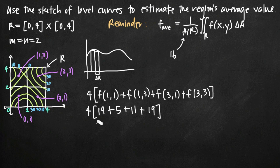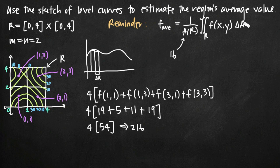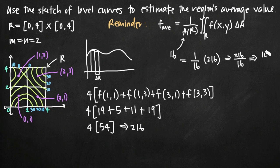Simplifying: 19 plus 19 gives 38, plus 11 gives 49, plus 5 gives 54. Multiplying 54 by 4 gives 216, which is our estimate of the volume for the double integral. For the average value, we multiply 1 over 16 by 216, giving 216 over 16. Simplifying: 108 over 8, then 54 over 4, then 27 over 2. That's our rough estimate of the average value over this 4 by 4 square.